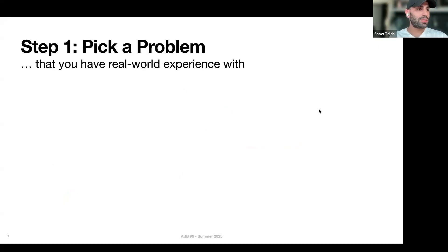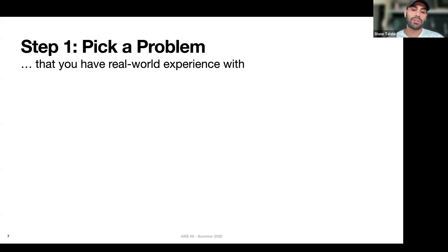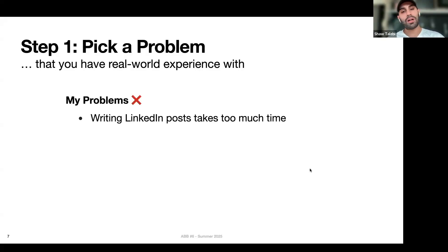Step one is to pick a problem, ideally one that you have real world experience with. If you're building a solution for yourself — an internal thing, or trying to make your work easier — this should be a given. For me, I have many different problems: writing LinkedIn posts takes too much time, and LinkedIn is a major client acquisition channel for me.